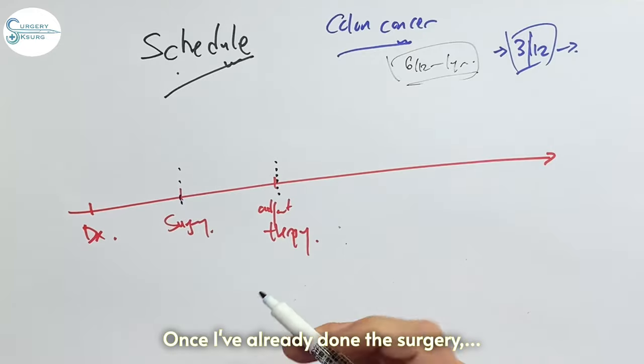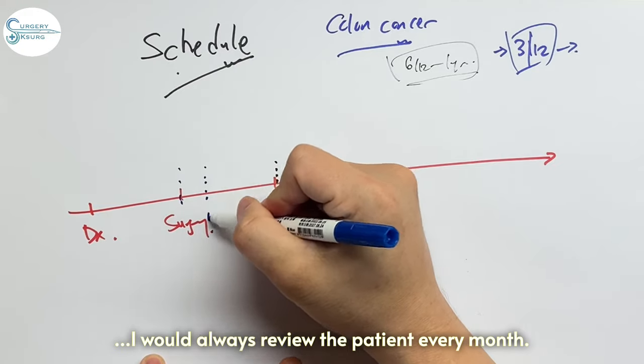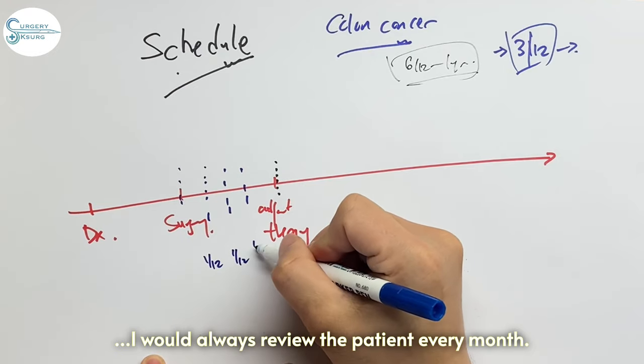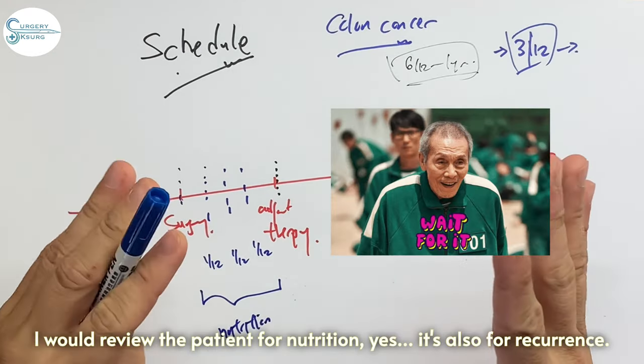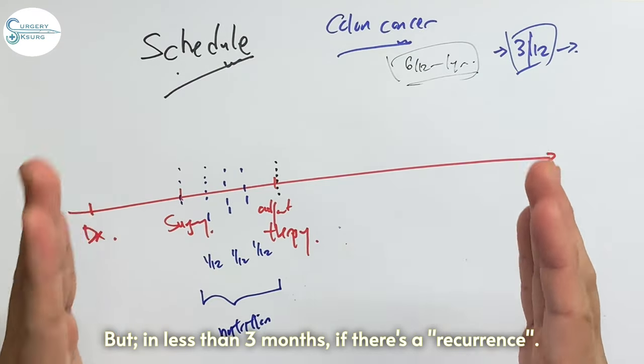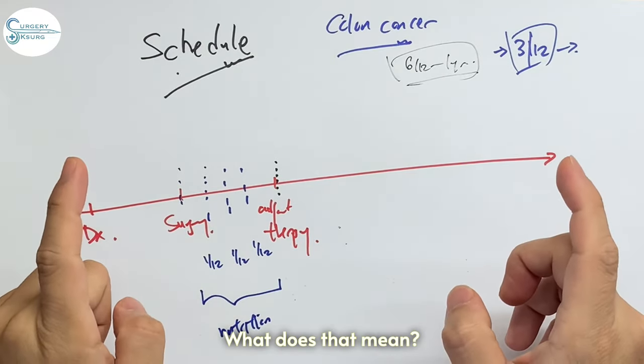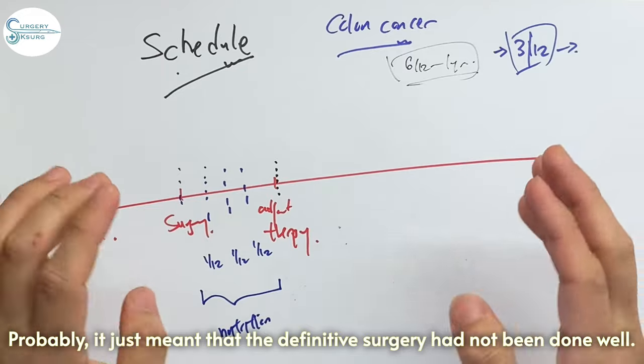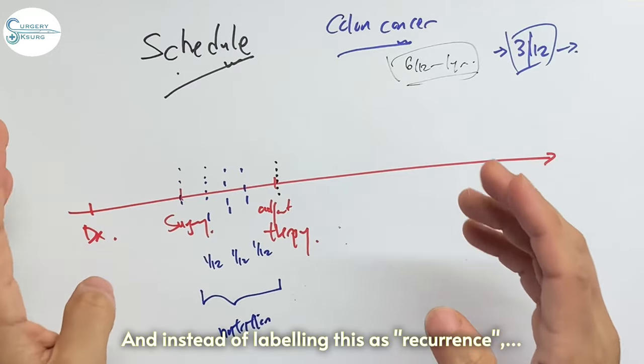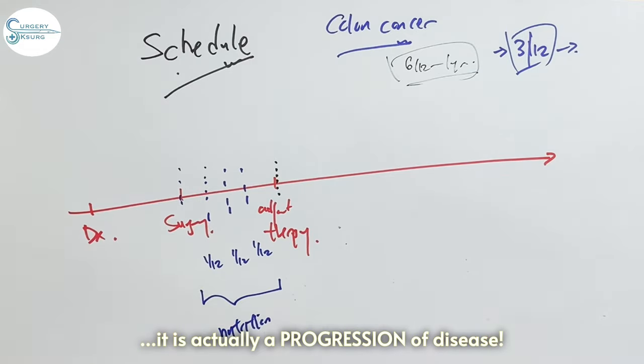Once I've already done the surgery and the patient is going for adjuvant therapy, I would always review the patient every month. I will review the patient for nutrition. Yes, it's for recurrence but if in less than three months there is a recurrence, what does that mean? Probably it just means that the definitive surgery has not been done well. And instead of labeling this as recurrence, this is actually the progression of disease.